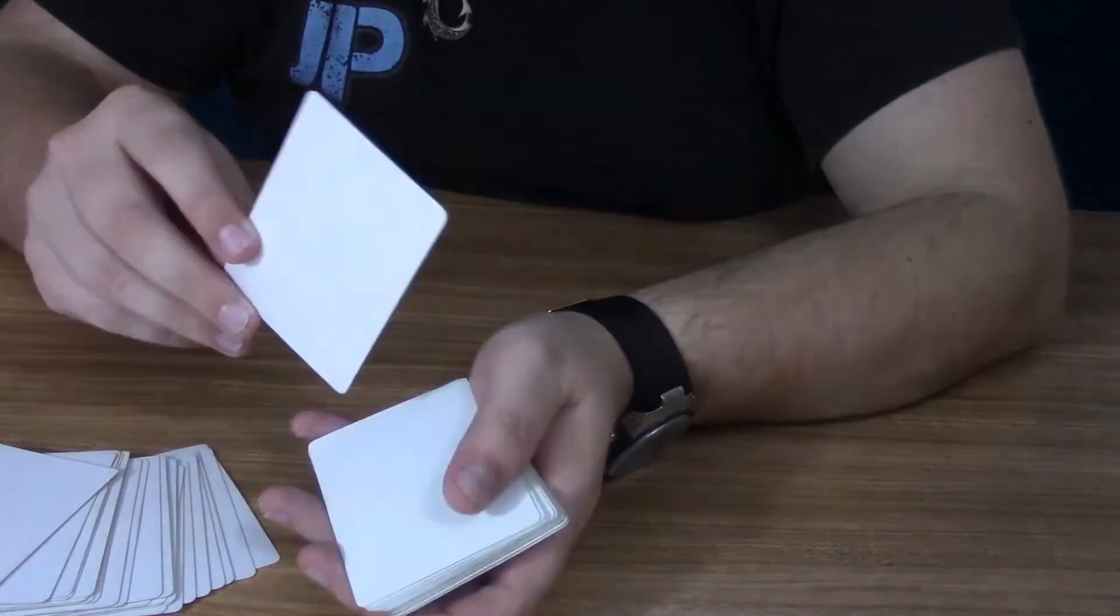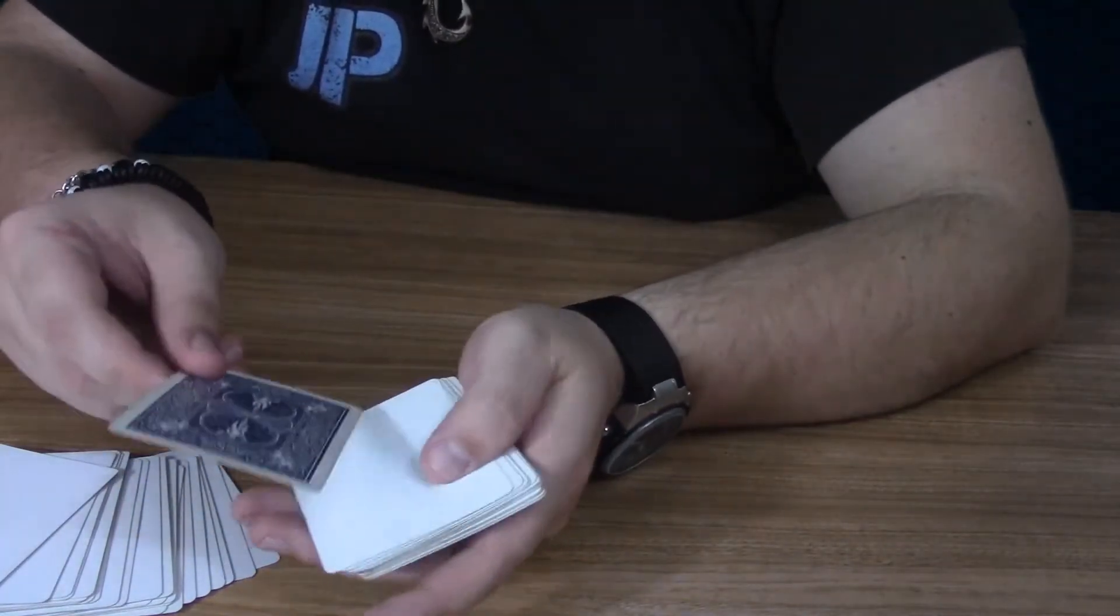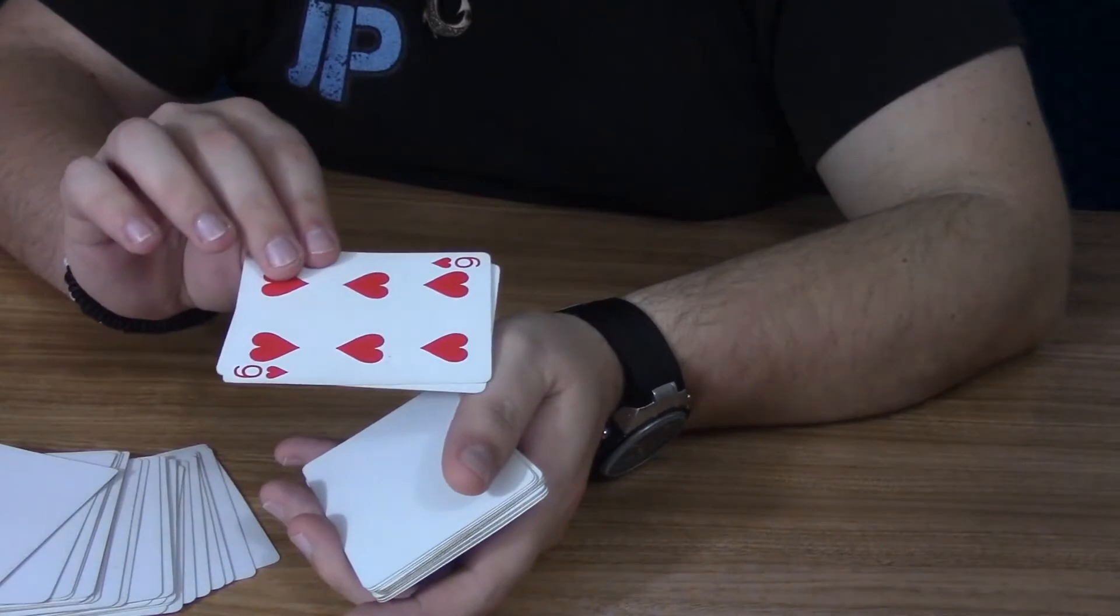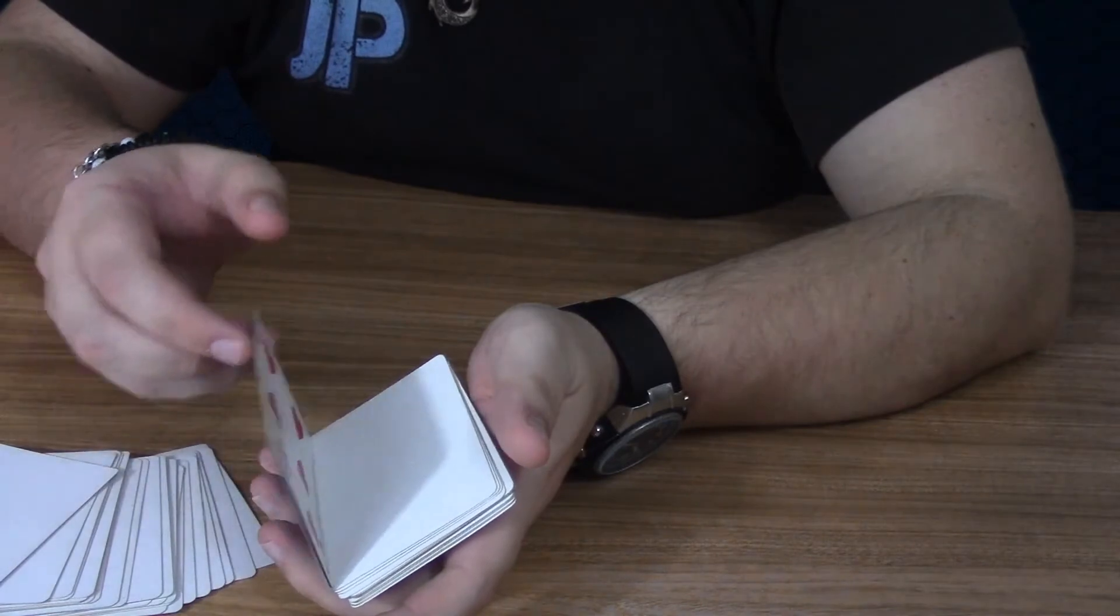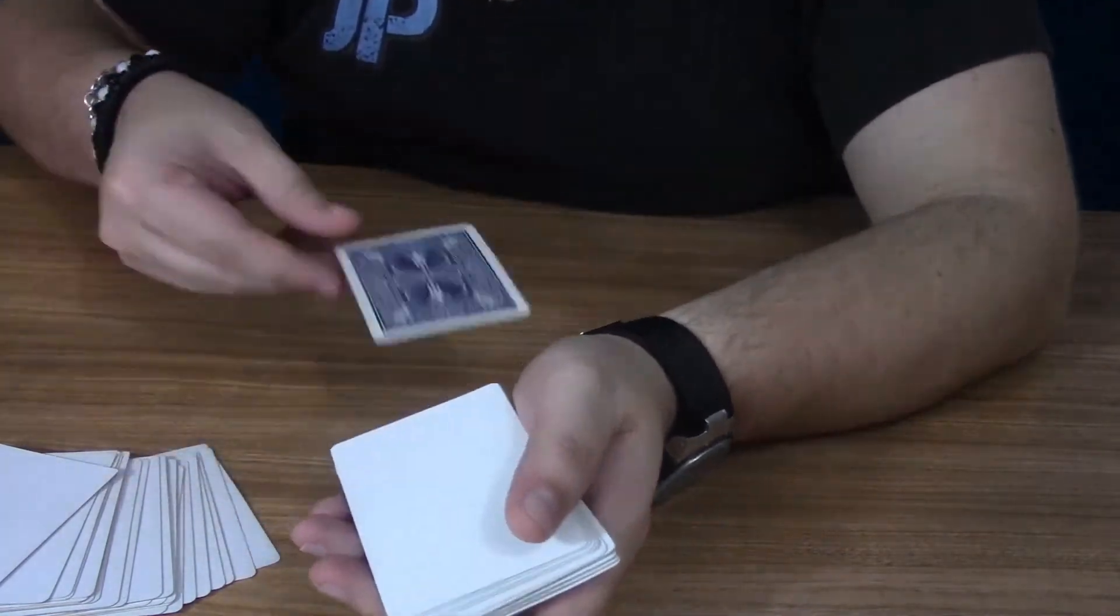And then I'm going to flip both of those cards over as one. All right? And then this card is what they think is the six of hearts. So again, you're just going to pass those cards off as one, flip both of those over, and then set it down somewhere else.